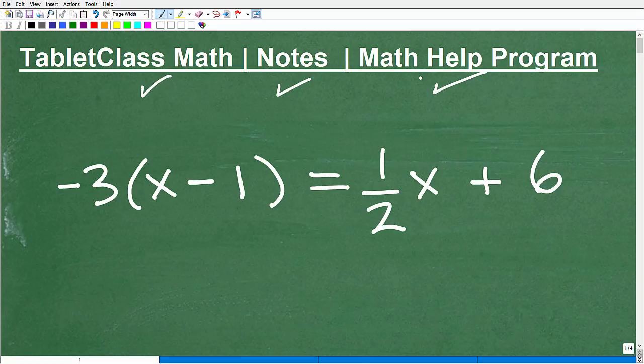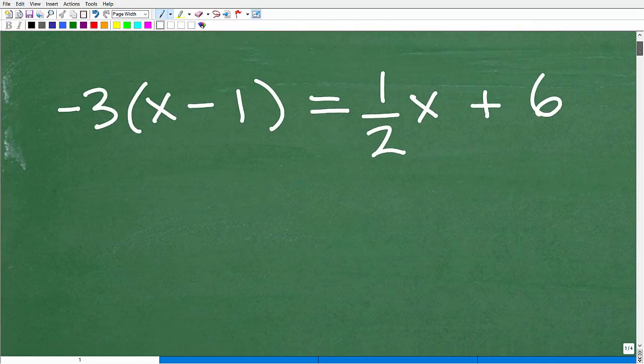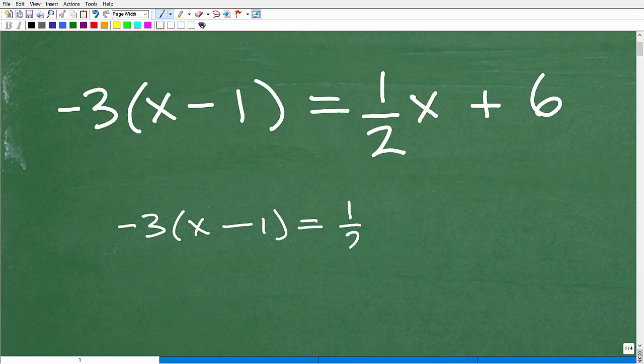Okay, so here we are. We're faced with this particular equation. What do we do? So again, this is a linear equation - this is the technical name for it. But what is the objective? Well, the objective is to solve for x. We're trying to get x is equal to some number here, some value. So let me go ahead and rewrite it a little bit smaller. Negative 3 times x minus 1 equals 1 half x plus 6.